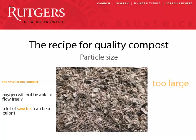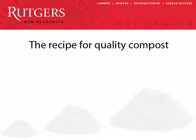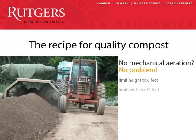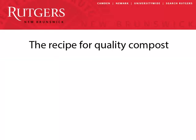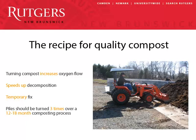On the flip side, overly large particles can slow the process by limiting the surface area that microbes need to thrive. In composting, pile size does matter. For piles without mechanical aeration, limit the height to 6 feet and the width to 14 feet to encourage airflow through the pile. Turning your compost pile also increases oxygen flow inside the pile and speeds up decomposition, but turning is a temporary fix, so piles should be turned at least 3 times over a 12- to 18-month composting process. Larger facilities may add a mechanical blower to provide a steady flow of oxygen.